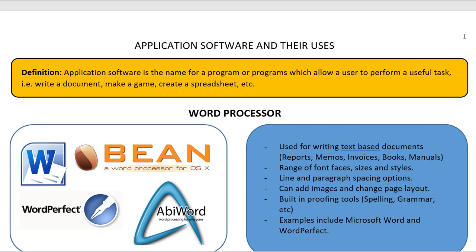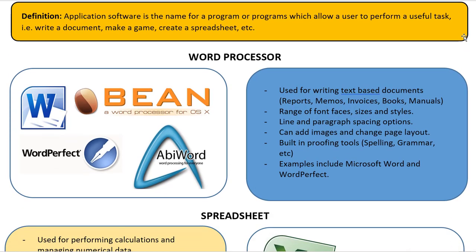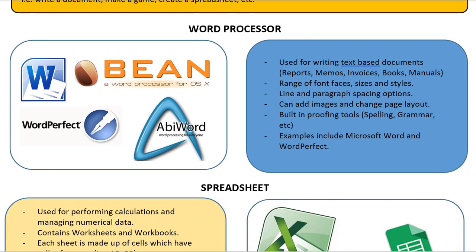Our first piece of application software is known as a word processor. A common word processor that you will know of is Microsoft Word, but a tip for the exam: please make sure that you actually use the term 'word processor' if it asks you what type of program can be used to write a letter, for example. Don't say Microsoft Word. A word processor is used for writing text-based documents such as reports, memos, invoices, books, or even manuals.